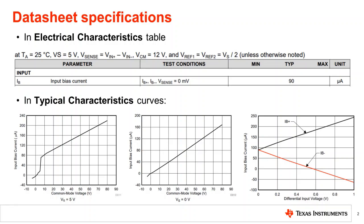To get a complete picture of how IB changes when the CSA is subject to conditions that are different from the default, we need to refer to the relevant curves in the typical characteristic section of the datasheet. In this particular datasheet there are three IB curves.